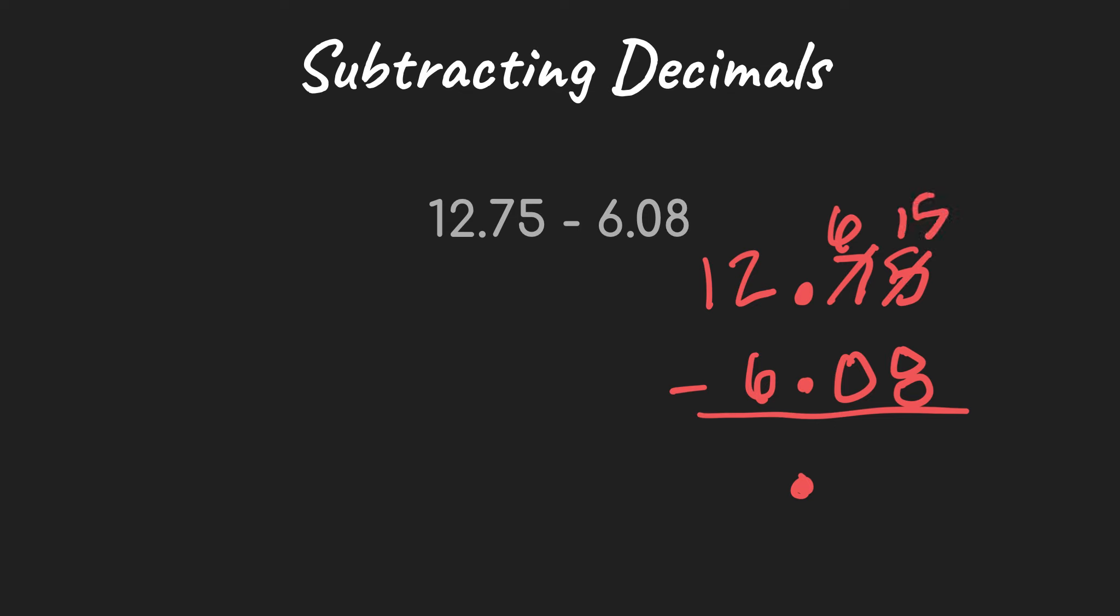15 minus 8. Again, I'll put 8 in my head and count up. 8, 9, 10, 11, 12, 13, 14, 15. So I get 7. 6 minus 0 is 6. I can't do 2 minus 6, so I have to regroup. Or you could just see that it's just 12 here minus 6.